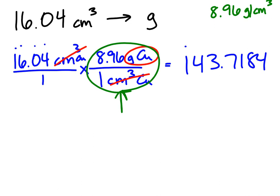So I'm looking at 1, 2, 3, 4 sig figs there. So I'm going to go 1, 2, 3, 4. This 1 is not enough to round that 7 up. So my answer is 143.7 grams.